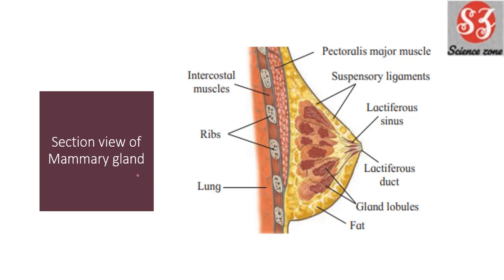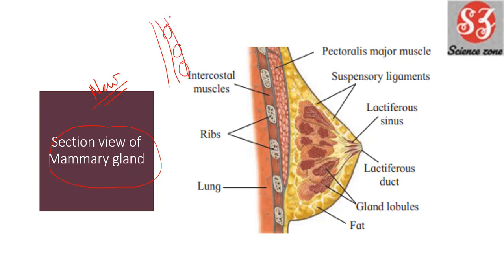Next is section view of mammary gland. This is actually a new part in the new syllabus — it was not in the old syllabus. So this question is not extremely important, but there are some chances it could be asked since it's new. You don't need to do detailed sketching; just draw a rough structure and do the labelling. It's the ribs and lung — just label them accordingly.